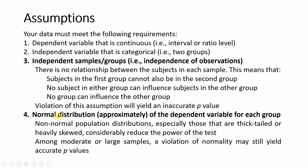Another important assumption is approximate normal distribution of the dependent variable for each group. Non-normal population distributions, especially those that are thick-tailed or heavily skewed, considerably reduce the power of the test. Among moderate or large samples, evaluation of normality may still yield accurate p-values, so if you have non-normal data make sure you have a very large or moderate sample.